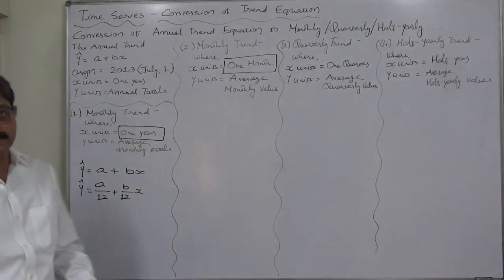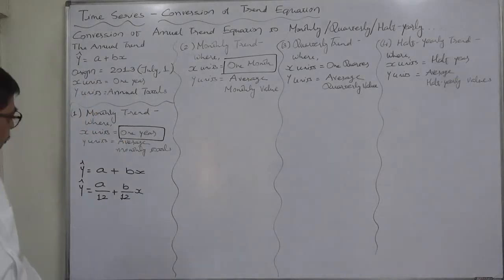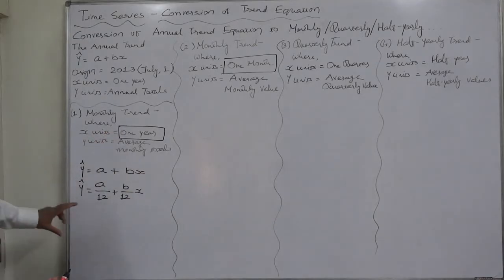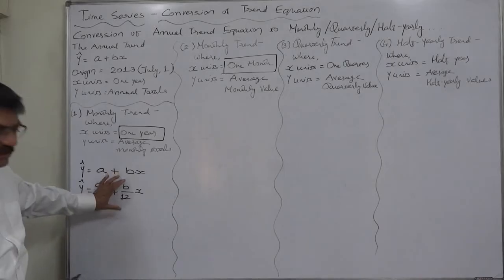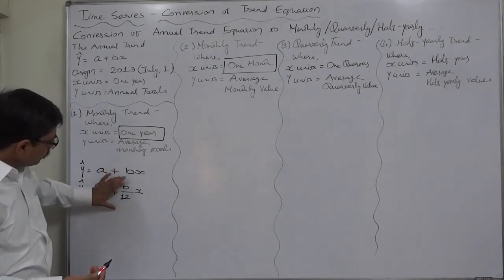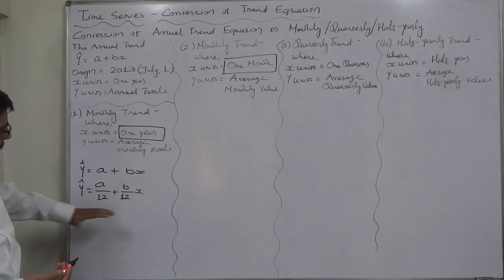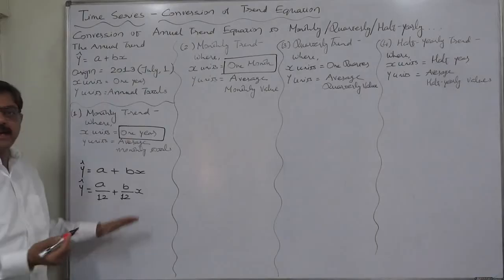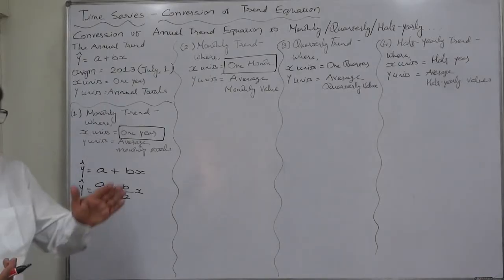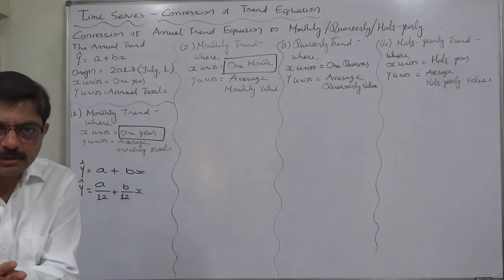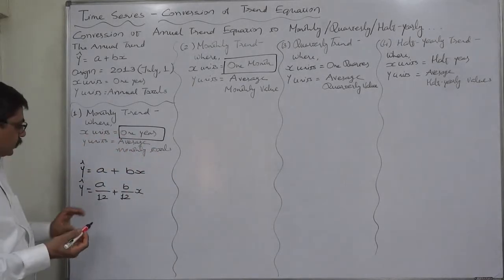This is the conversion of this annual trend into a monthly trend. But the reality is, in this case x units remains one year. That means y units are average monthly totals. b is the rate of change, but the method to be understood is: